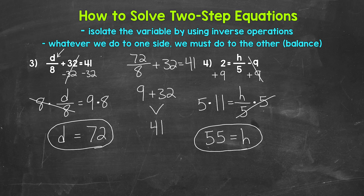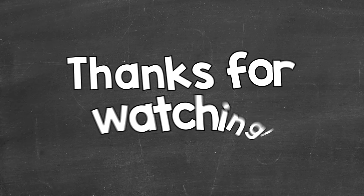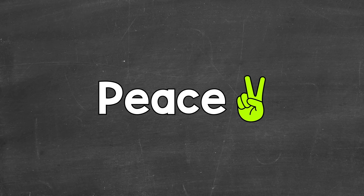That's our solution. Let's check it by plugging 55 in for h. 2 equals 55 divided by 5 minus 9. 55 divided by 5 is 11, and 11 minus 9 is 2. So we are correct. h equals 55. There's how to solve two-step equations. I hope that helped — thanks so much for watching. Until next time, peace.